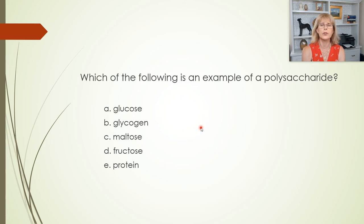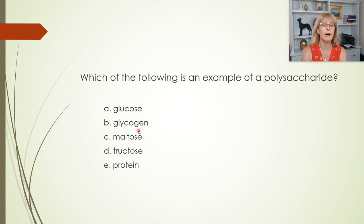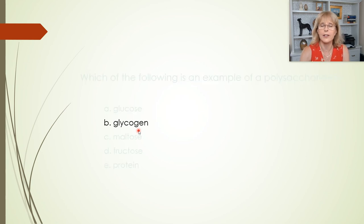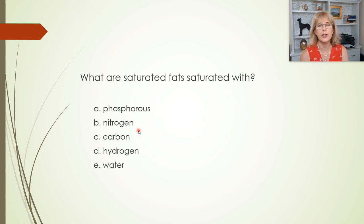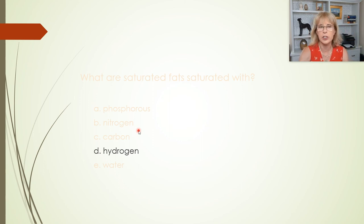Protein — well, that's a protein. Glycogen — glycogen is a starch, and some people consider glycogen an animal starch. And fiber, like cellulose — those are polysaccharides. What are saturated fats saturated with? Saturated with hydrogen. And unsaturated fats have got double covalent bonds between adjacent carbons.